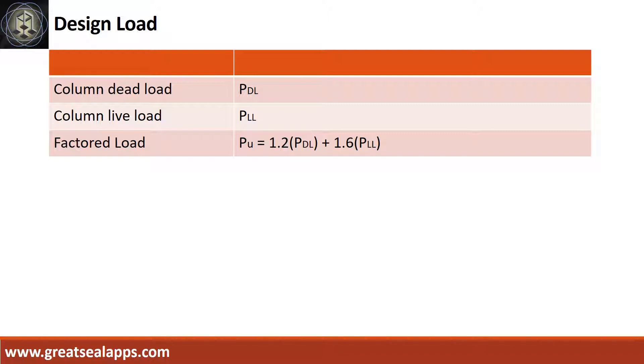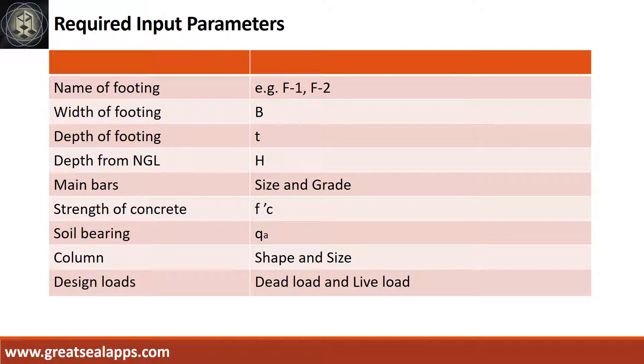Get the factored load from the dead load and the live load. Enumerate input parameters required: name of footing like F1, F2, width of footing, depth of footing, depth from natural gradeline, main bars with size and grade, strength of concrete, soil bearing capacity, column shape and size, and design loads.